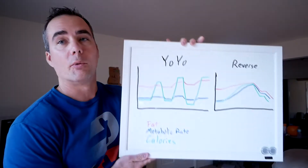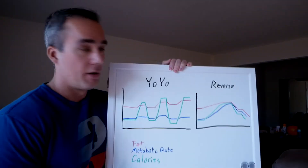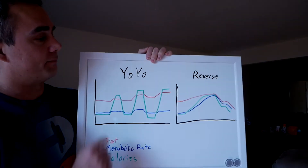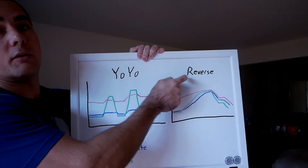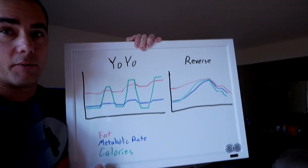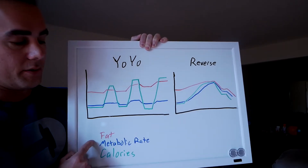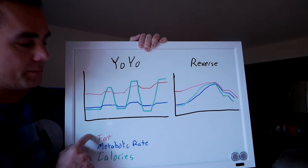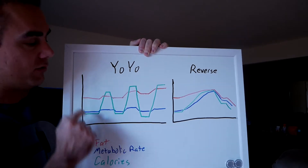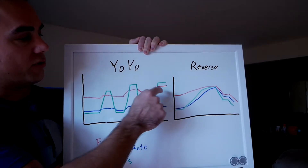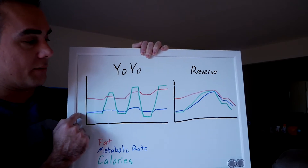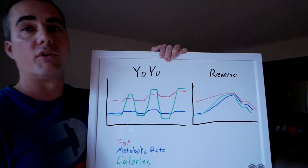The best way I can explain this is back to the whiteboard. I've got two different graphs — one for yo-yo dieting, one for reverse dieting. There are three things we're tracking: calories in green, metabolic rate in blue, and body fat in red. In both graphs, we're starting with body fat pretty high but calories and metabolic rate low.